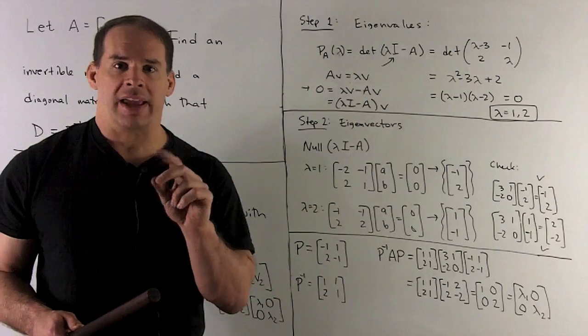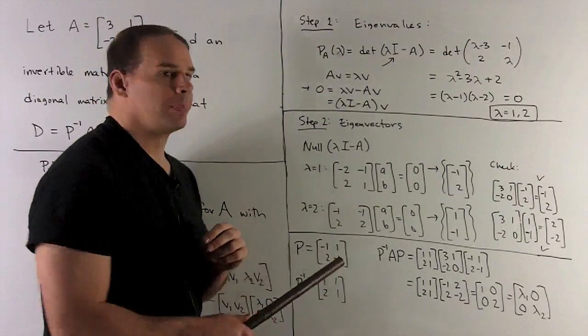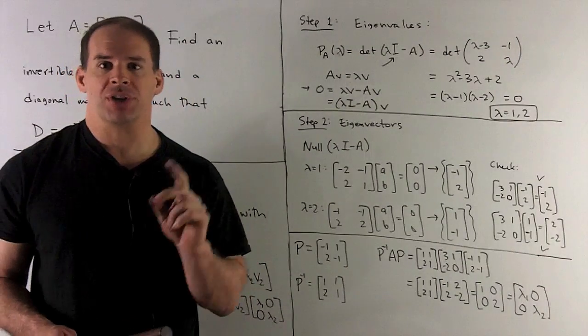If I'd chosen our eigenvectors in the other order, say I went with one minus one minus one, two, I'd get out the diagonal matrix, two, one.